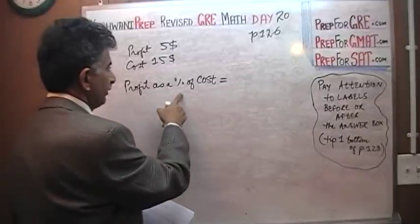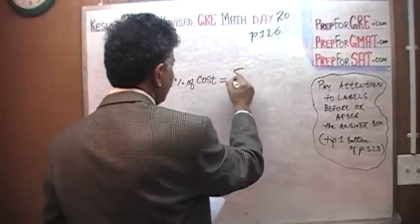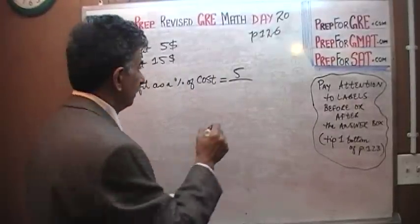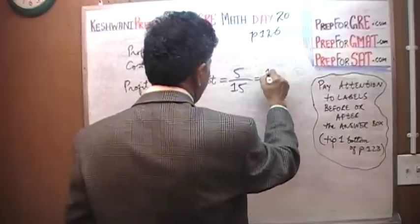Well, the profit is $5 as a percentage of cost, not as a percentage of revenue. It is $15 as a cost, so it is one-third.